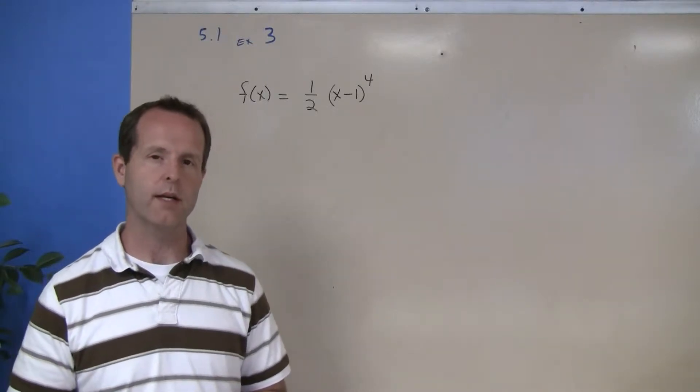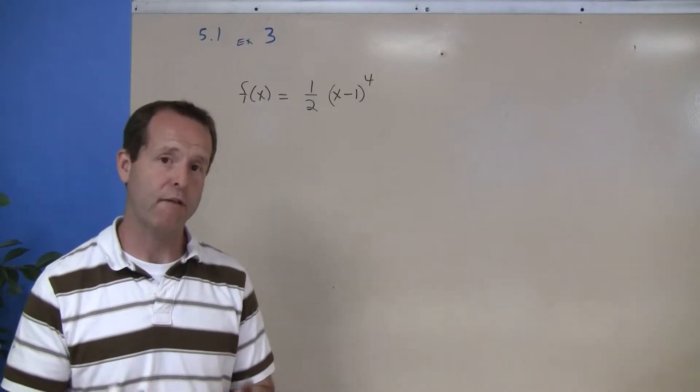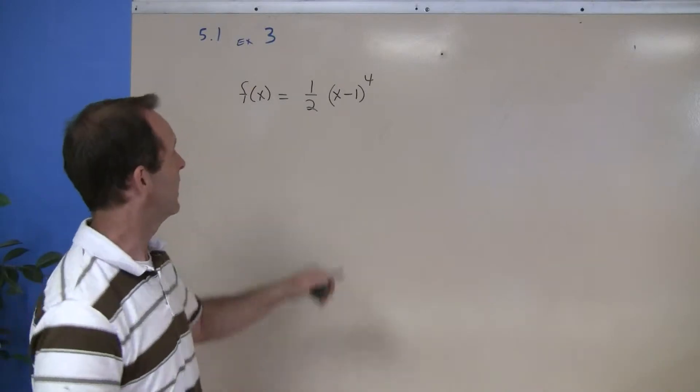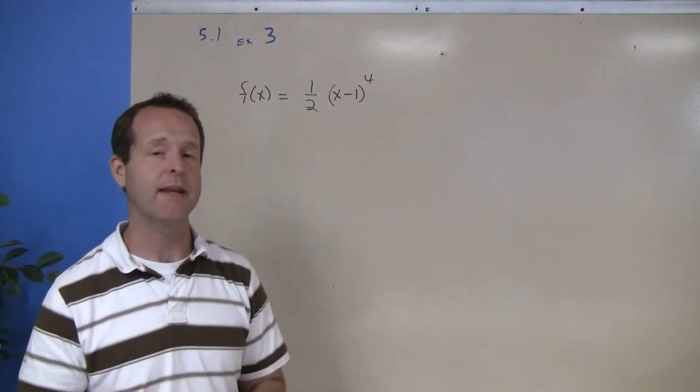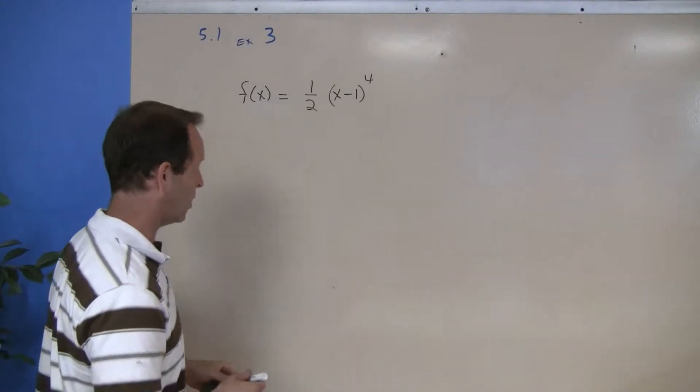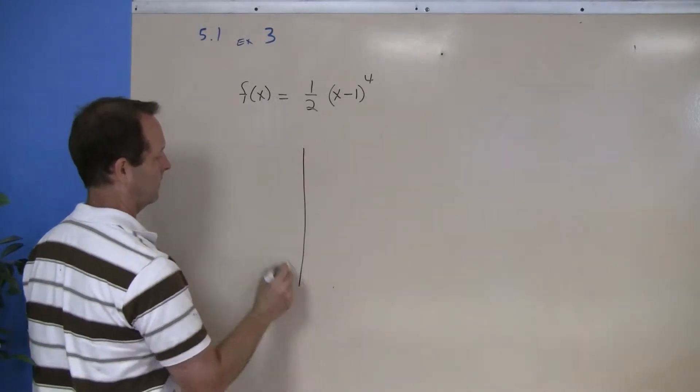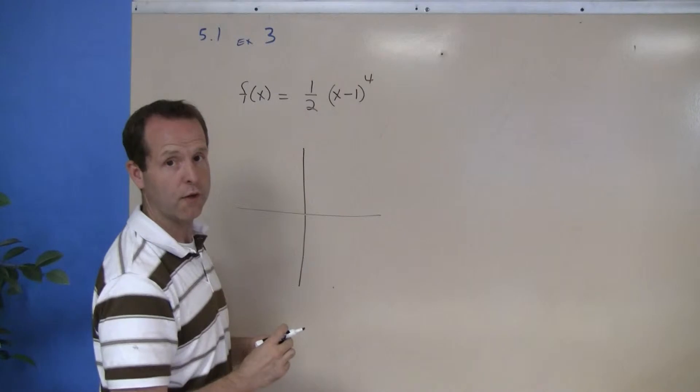So the first thing I want to do is, what's the most basic function that's happening here? I look through it and it's x to the fourth. Everything else is kind of being added to that, so I'm going to start with what the graph of x to the fourth looks like.